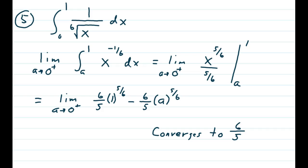So we have a limit as A approaches 0 from the positive side of 6/5ths times 1 to the 5/6th power minus 6/5ths times A to the 5/6th power.